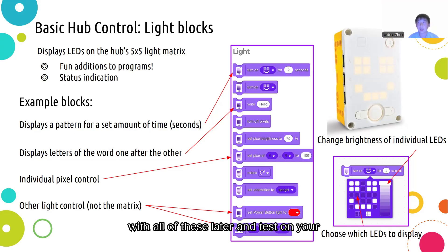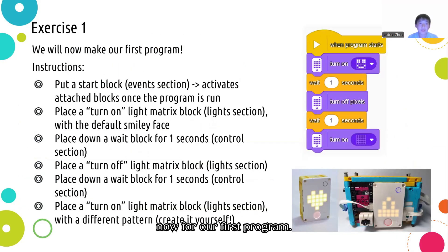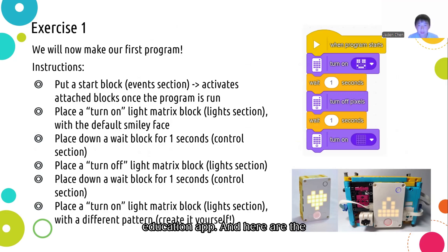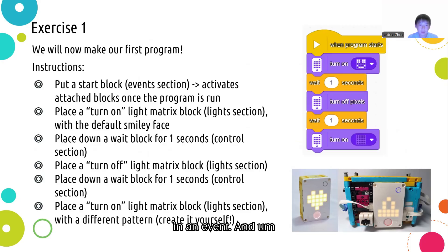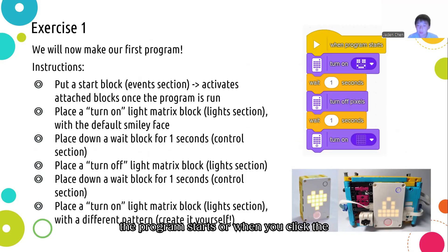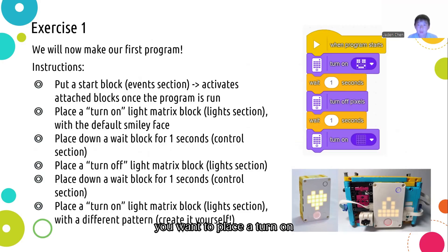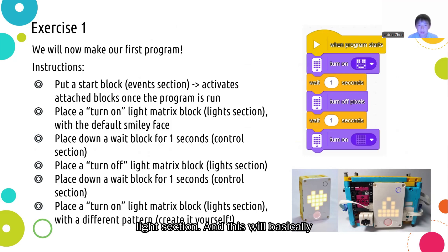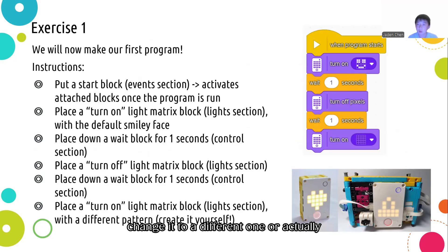So now for our first program. Create a new program inside your education app. First, place a start block found in the events section, which runs all the blocks attached below it when the program starts or when you click the arrow button at the bottom right of your workspace. After that, place a turn on display block from the light section. This will display either the default smiley face or a different design of your choice.